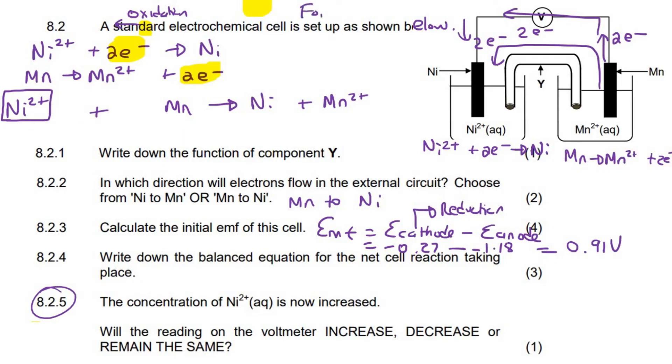So when the forward reaction is favored, the voltage goes up. When the reverse is favored, then the voltage goes down. Okay. So what will happen to the voltage? It will increase.